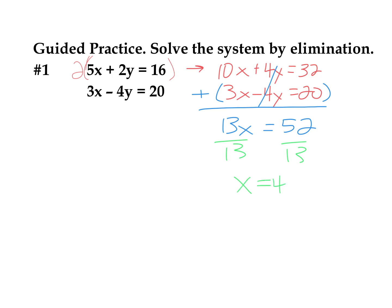Once I know the value of one variable, plug it into either of the two original equations. Always go back to your original equations, in case you made a mistake while multiplying — maybe you forgot to multiply one of the parts by 2, or made an arithmetic error. We don't want to check our solution in a wrong equation. So go back and check in one of your two original equations. I'm going to pick the first equation.